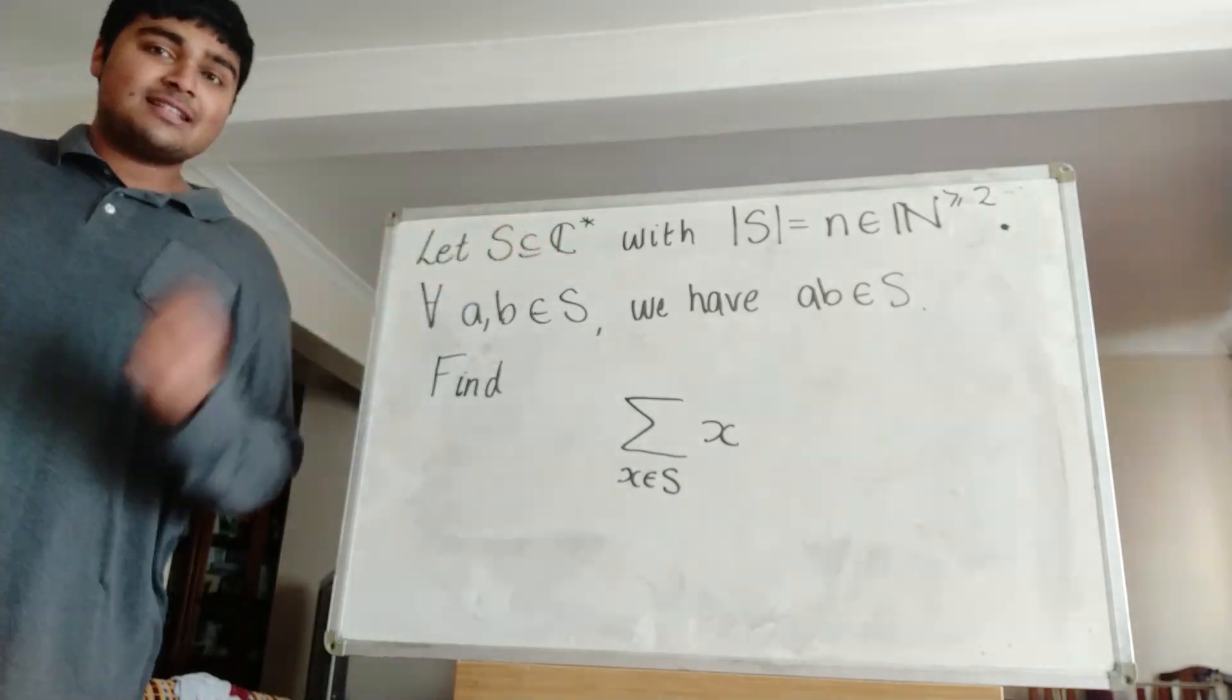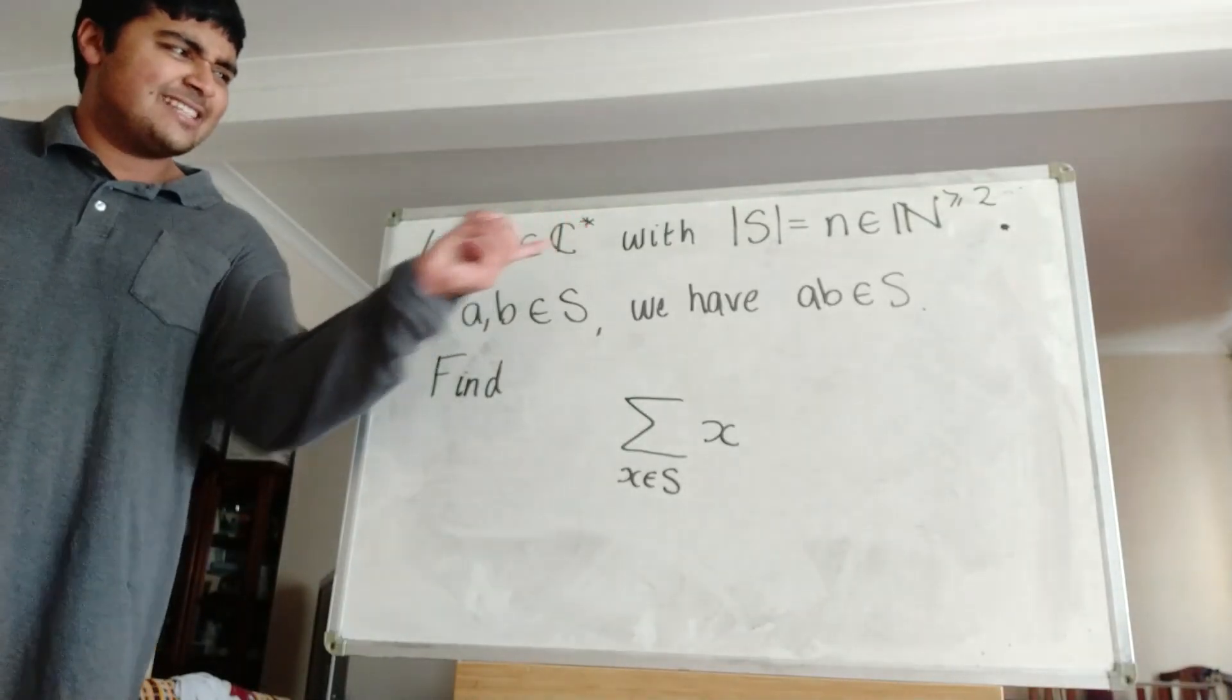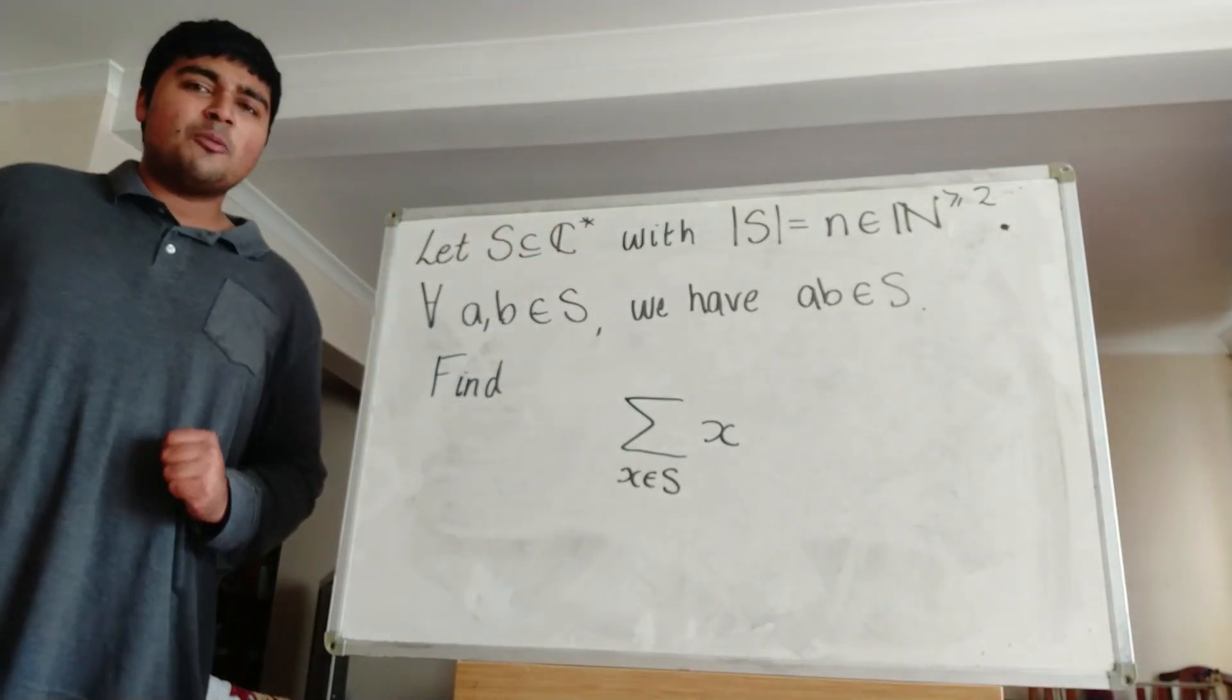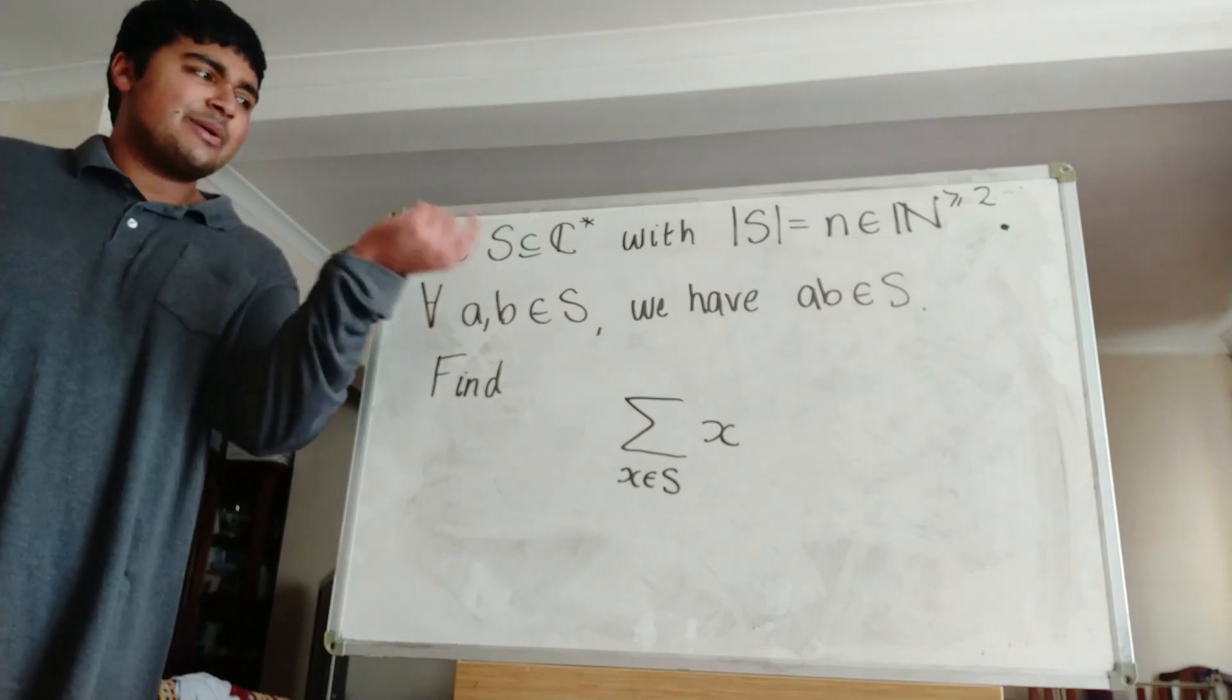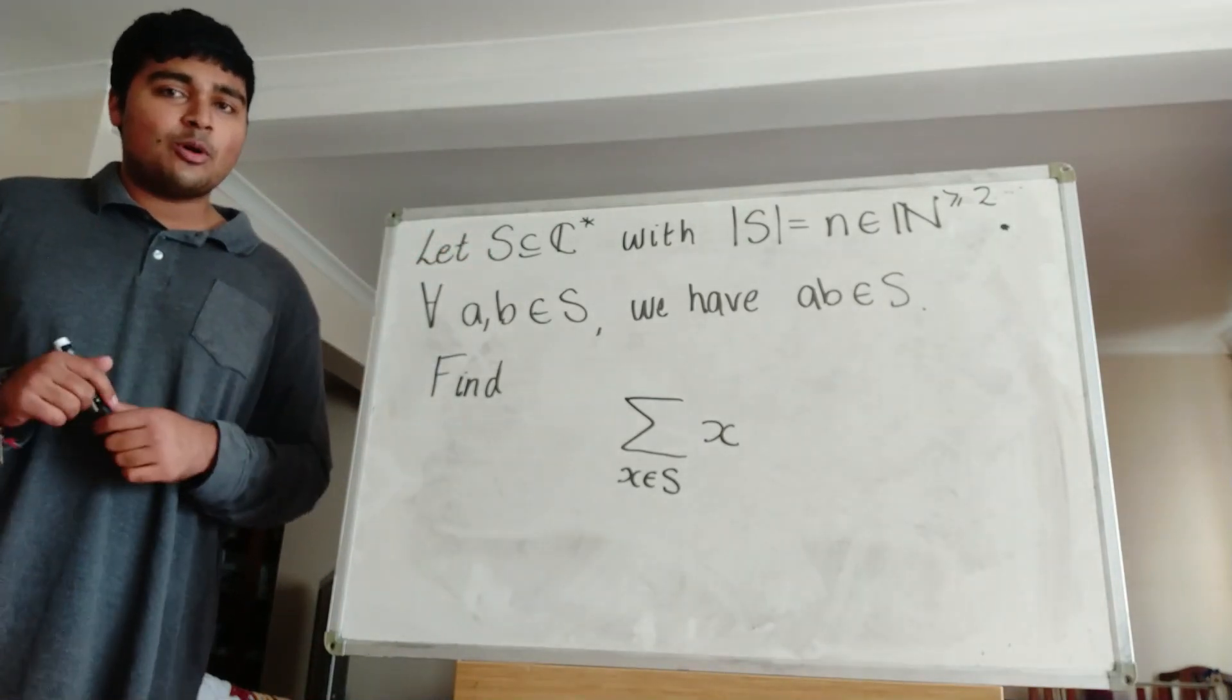We have a set S, which is a subset of the complex numbers raised to the star. So this basically means all the complex numbers except without zero. So S is simply a set of non-zero complex numbers.